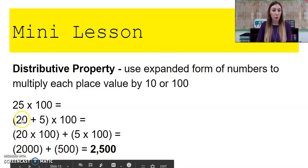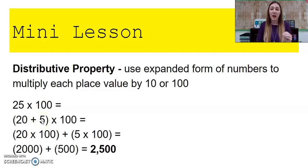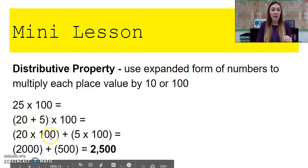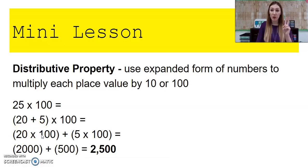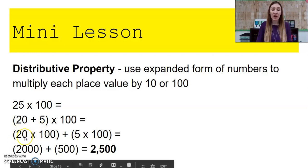So I have 20 plus 5, that's going to give me 25, but we're breaking it apart, and then we're going to multiply each of those values by 100. So if I multiply 20 times 100, then I'm going to add that to my 5 times 100. When I multiply 20 times 100, I get 2,000. A trick to this is I can multiply my digits, my 2 times my 1, 2 times 1 is 2, and then I can just count the number of zeros that I have.